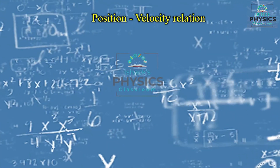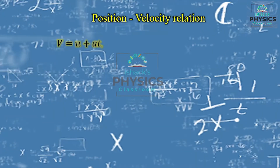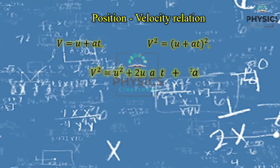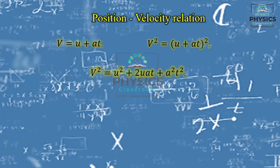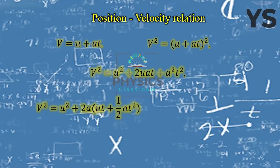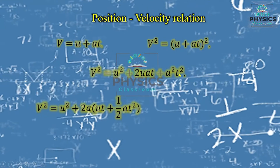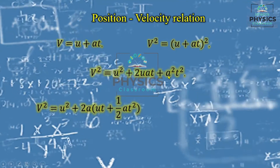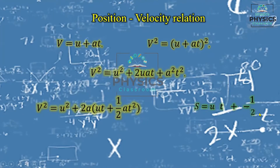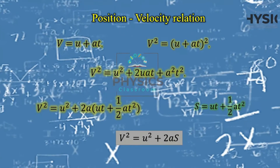Third equation: velocity-position relation. Starting from v = u + at, squaring both sides: v² = (u + at)². Expanding using (a+b)² = a² + 2ab + b²: v² = u² + 2uat + a²t². We can group the last two terms: v² = u² + 2a(ut + ½at²). Since s = ut + ½at², we get v² = u² + 2as. This is the velocity-position relation.